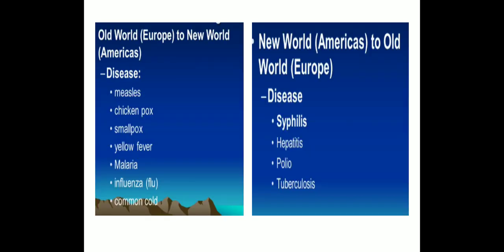Now let us discuss diseases. In terms of diseases, from old world to the new world, the diseases introduced were: measles, chicken pox, smallpox, yellow fever, malaria, influenza, and common cold. From new world to the old world, the diseases introduced were syphilis, hepatitis, polio, and tuberculosis. The impact was greater on the new world, because people there were not having immunity against measles, chicken pox, and smallpox — that's why more population died in the new world due to these diseases.